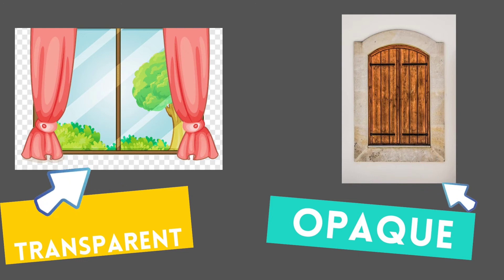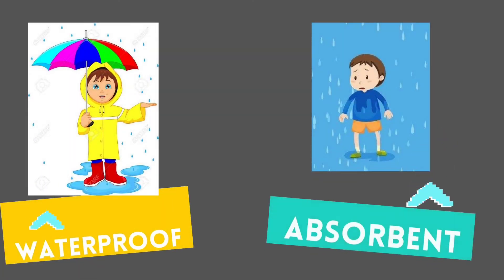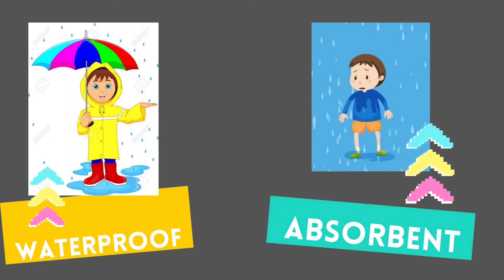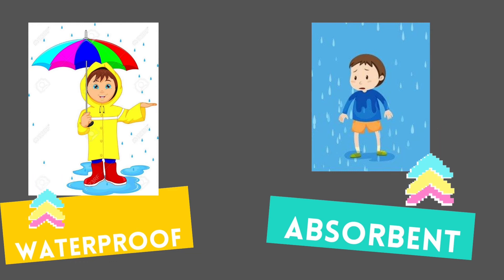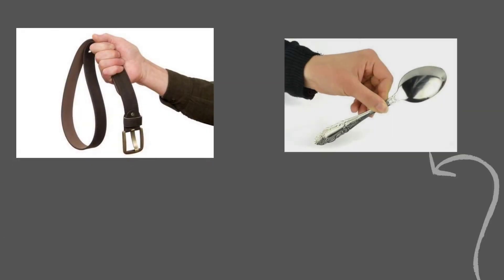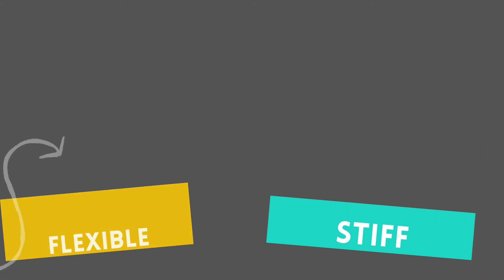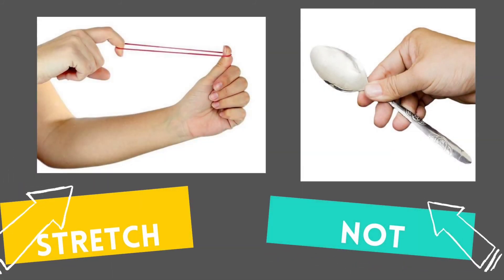Next, transparent or opaque — a transparent window means we can see outside. Next, waterproof or absorbent — this raincoat is waterproof and this cotton shirt is absorbent.